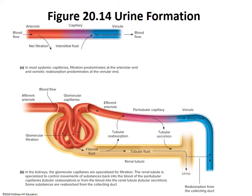Looking at the diagram — this isn't how the nephron actually looks, but it's a good schematic. The afferent arteriole brings blood into the glomerulus. As blood enters the glomerulus, plasma carrying electrolytes, waste products, and other substances gets filtered. This is glomerular filtration. The fluid pushed out is called filtrate. The filtered blood exits via the efferent arteriole, which turns into the peritubular capillary running alongside the tubule.